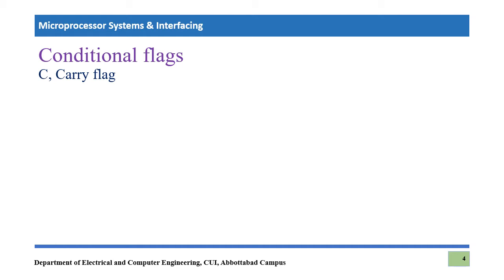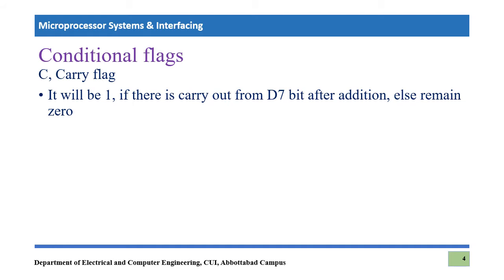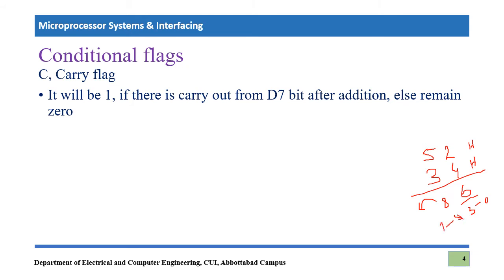The very first flag is the carry flag. It will be 1 if there is a carry out from the D7 bit after addition; otherwise it remains 0. For example, if we add 52h and 34h: 2 plus 4 equals 6, and 5 plus 3 equals 8. There is no carry out from D7, so the carry flag would be 0 in this example.